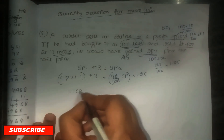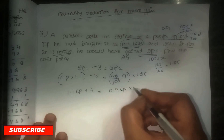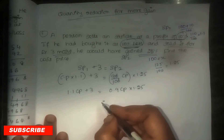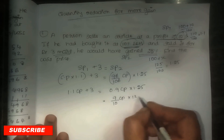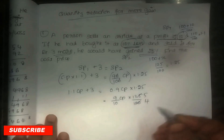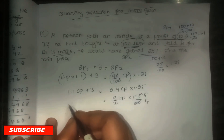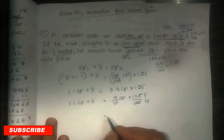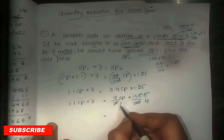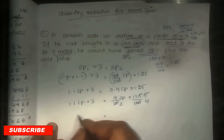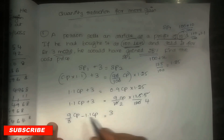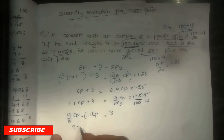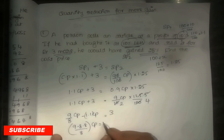So the equation becomes: 1.1 CP + 3 = 0.9 CP × 1.25. Working through: (9/10) CP × (5/4) = (9/8) CP. Then 9/8 CP − 1.1 CP = 3. Taking LCM: 9 − 8.8 = 0.2, so (0.2/8) CP = 3.